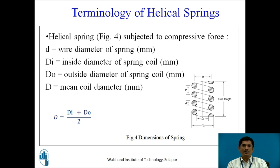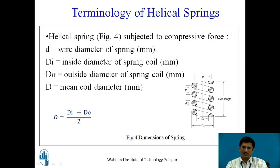Now the important part — the terminology of helical springs. The helical spring is subjected to compressive force. Small d is the wire diameter. Di is the inside diameter, and Do is the outside diameter of the spring coil. Capital D is the mean coil diameter, calculated as the average of the outside and inside diameter.